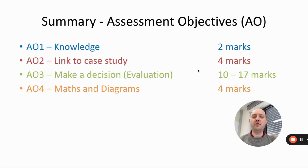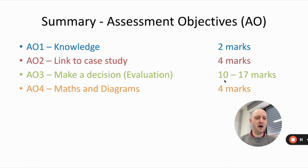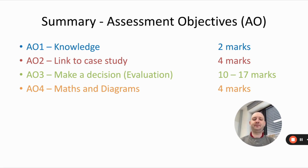AO3 is where you're required to make a decision — I call this the evaluation section. These are usually worth 10 marks, but in certain parts of the exam there are also 17-mark questions. AO4 is maths and diagrams, normally worth four marks.